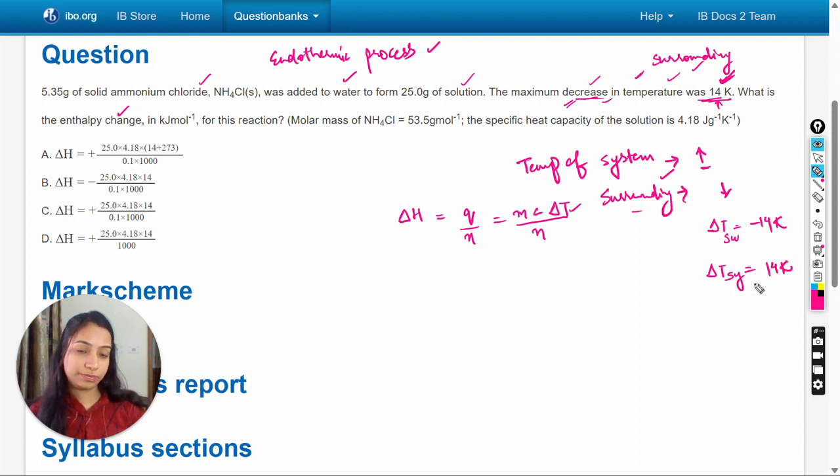And here we will put this value. Firstly put this value that is 5.35 grams - sorry, the total mass of the solution is 25 gram because after adding water 25 gram of the solution is formed. So here we will write 25.